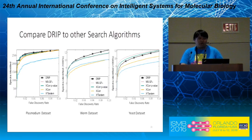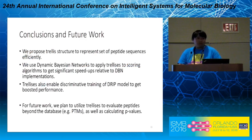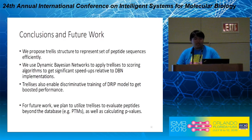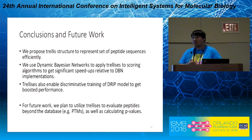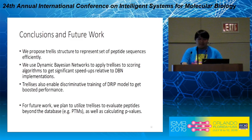For completeness, we show our latest DRIP result compared to other search engines, and we are able to achieve the best performance on two out of three datasets. In conclusion, in this work we propose a trellis structure to represent a set of candidate peptides efficiently, and we use dynamic Bayesian networks to connect trellises to various scoring functions to get significant speedups. We also apply trellises to discriminatively train the DRIP model to get greatly boosted performance. For future work, we plan to utilize the trellis structure to evaluate peptides beyond the database, such as peptides with PTMs, as well as to calculate p-values for peptides, which could potentially boost the performance of scoring functions.